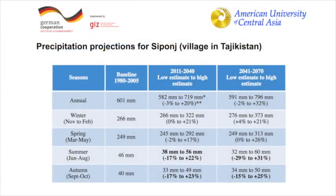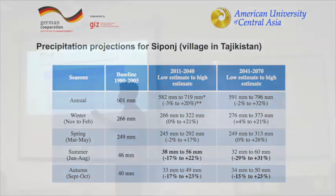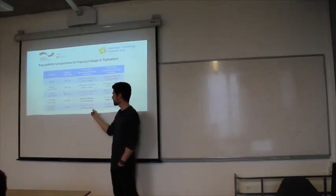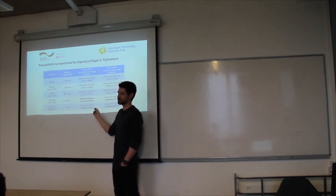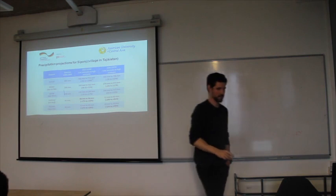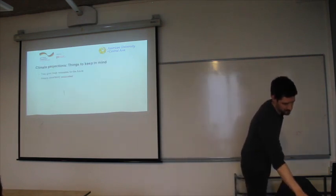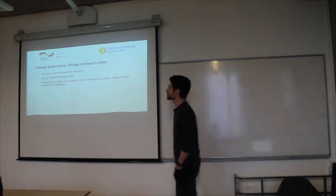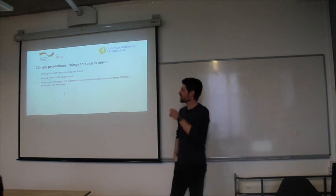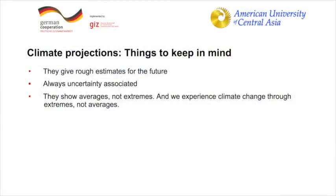With precipitation, again, it's very diverse. When you look at the different seasons, there's basically often this, so to say, disagreement over different models. It might be a decrease, or it might be even an increase in precipitation. And another thing is, what is really important to consider when you look at time projections, that is that they, I mean, they always show averages, not the extremes.